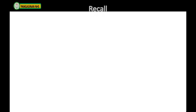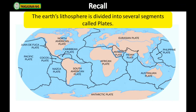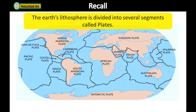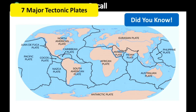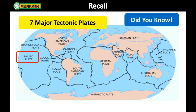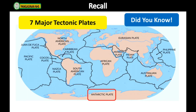Let us recall what you have learned from our past lesson. You have learned that the Earth's lithosphere is divided into several segments called plates. There are seven major tectonic plates: the Pacific plate, North American plate, Eurasian plate, African plate, Antarctic plate, South American plate, and Australian plate.